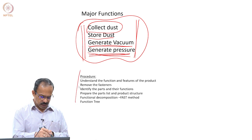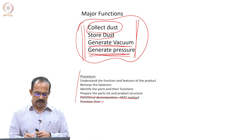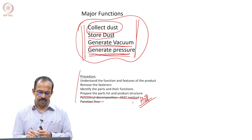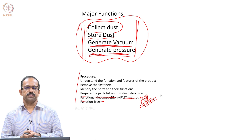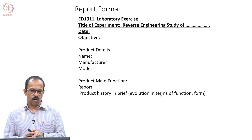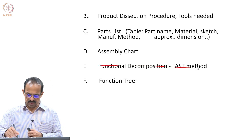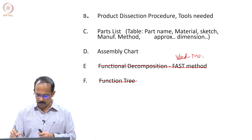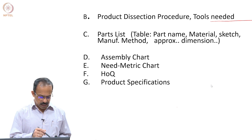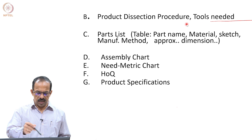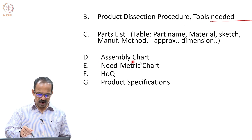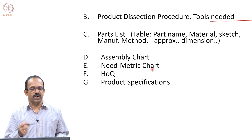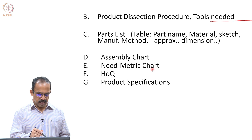The procedure is almost the same. Here we do not do the functional decomposition for the time being; we will be doing only the house of quality, which is what is needed in this particular exercise. Please do the need identification and house of quality for this product. You will be doing the product dissection procedure, then the parts list, then the assembly chart — these are common for all the reports. After this, you will be looking at the need-metric chart, which you need to prepare and show in your reports.